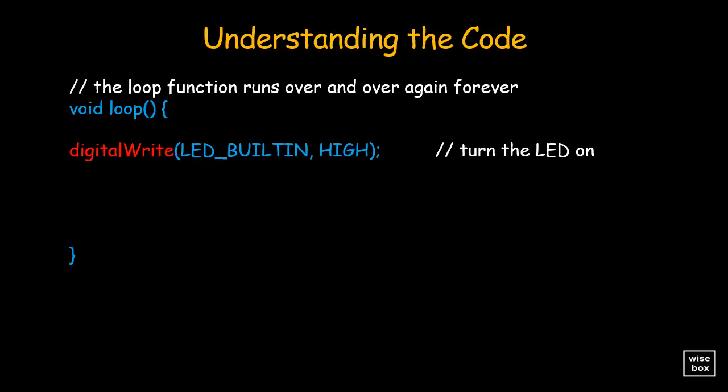Then we turn it off with this line. In here, we use the digitalWrite function to write a low value to the digital pin. That takes the LED_BUILTIN pin back to 0V, and this turns the LED off.